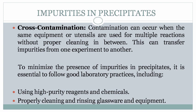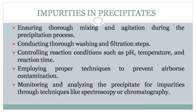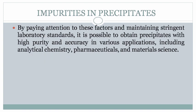To minimize the presence of impurities in precipitates, it is essential to follow good laboratory practices, including using high-purity reagents and chemicals, properly cleaning and rinsing glassware and equipment, ensuring thorough mixing and agitation during the precipitation process, conducting thorough washing and filtration steps, controlling reaction conditions such as pH, temperature, and reaction time, employing proper techniques to prevent airborne contamination, and monitoring and analyzing the precipitate for impurities through techniques like spectroscopy or chromatography. By paying attention to these factors and maintaining stringent laboratory standards, it is possible to obtain precipitates with high purity and accuracy in various applications, including analytical chemistry, pharmaceuticals, and materials science.